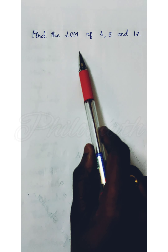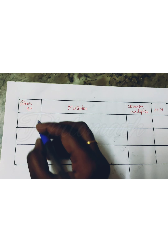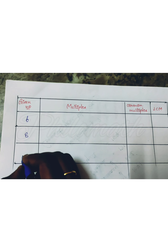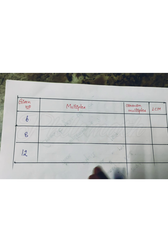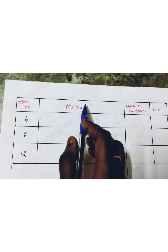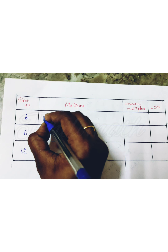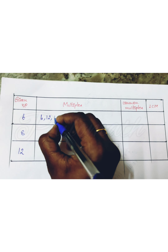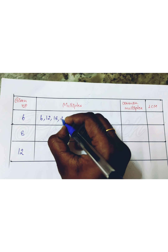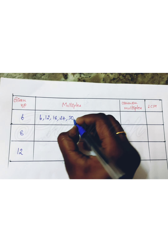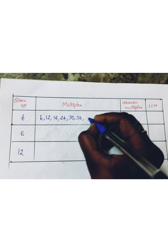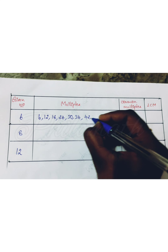Let's see one more example: find the LCM of 6, 8, and 12. The given numbers are 6, 8, and 12. First, we write the multiples. The multiples of 6 are: 6, 12, 18, 24, 30, 36, 42, and so on.